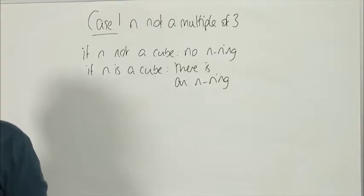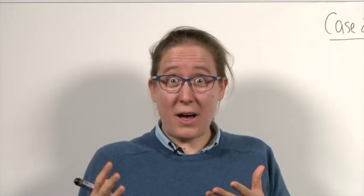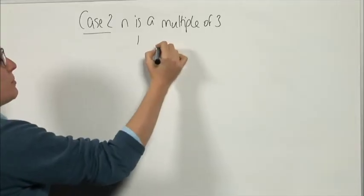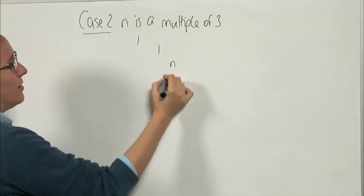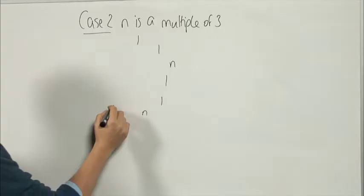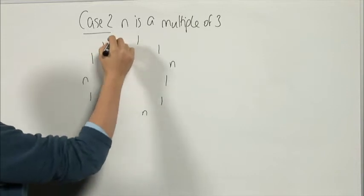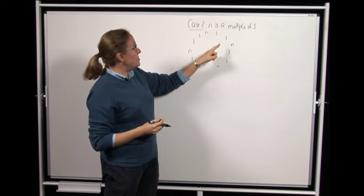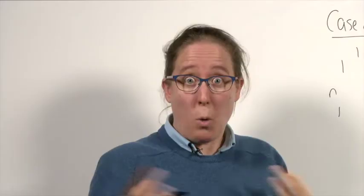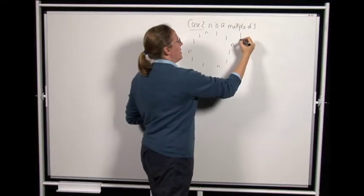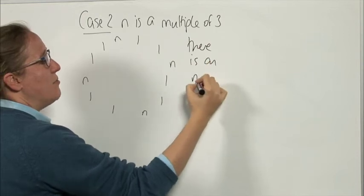Case 2: n is a multiple of 3. Learning from our experience with n=3 earlier, I believe there is always an n-ring. If we take the triple (1, 1, n) and repeat it all the way around, since n is a multiple of 3 we can write this triple an integer number of times to fill exactly n positions. Any three consecutive numbers will be 1, 1, and n in some order, so their product is n. Therefore if n is a multiple of 3, there is an n-ring.